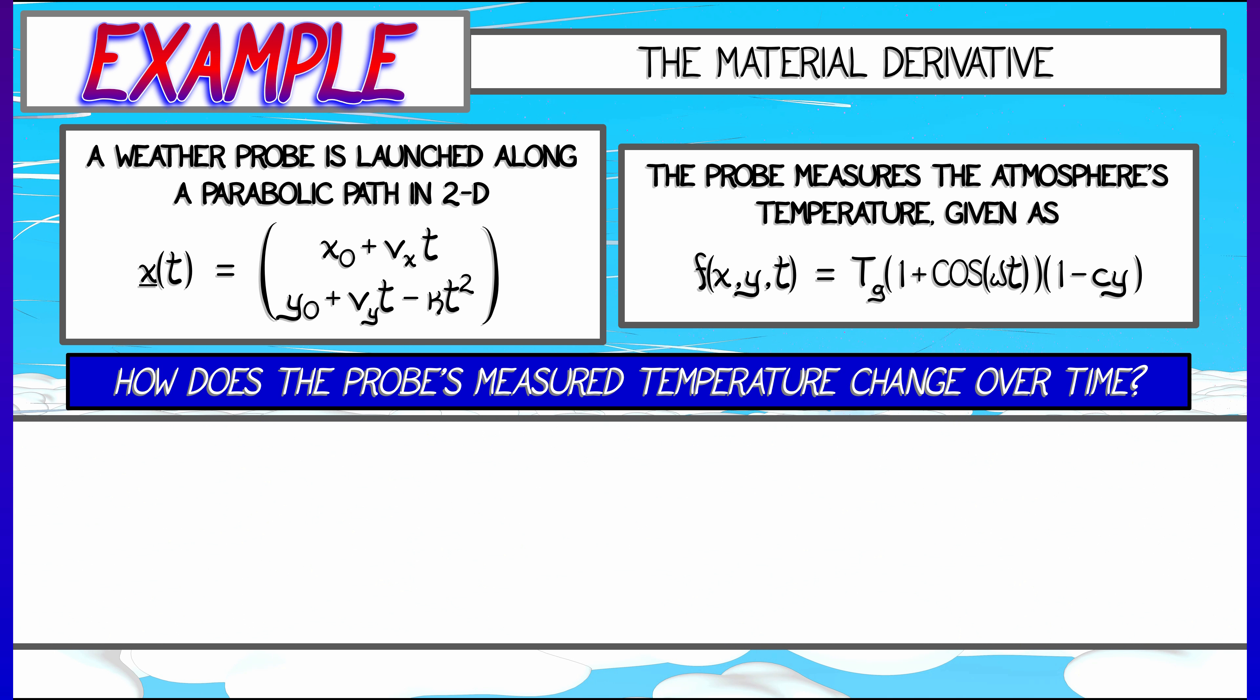Well, this would be the total derivative. We have to compute the partial of F with respect to T, then the partial of F with respect to the space variables times the velocity of that particle's path, dx dt. So it's pretty easy to compute partial F partial T, right? Just do that.